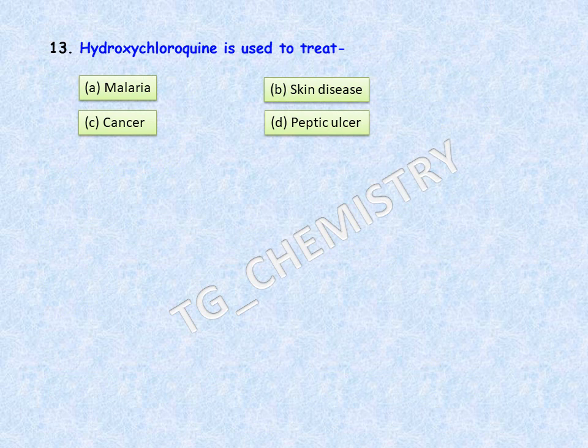Next question: hydroxychloroquine is used to treat? Options are: A, malaria; B, skin disease; C, cancer; D, peptic ulcer. The correct answer is option A, malaria.